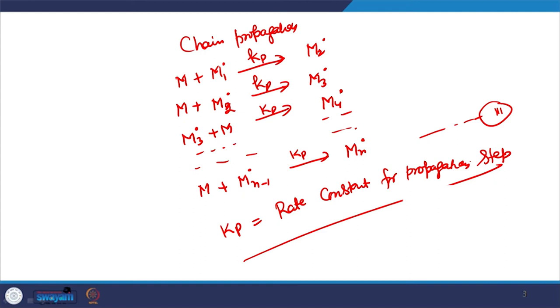The value of Kp for most monomers in radical polymerization is larger than those usually encountered in step polymerization.